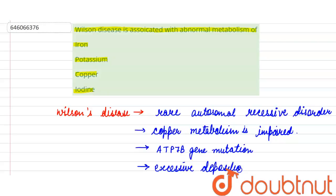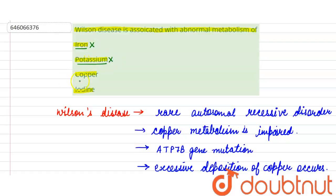Excessive deposition of copper occurs. Discussing the options: the first option, iron, is incorrect; the second option, potassium, is also wrong; the third option, copper, is correct; and the last option, iodine, is again incorrect. So the answer will be C, that is copper.